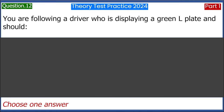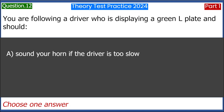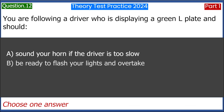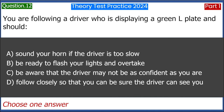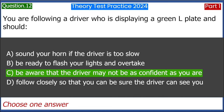You are following a driver who is displaying a green L plate and should: A. Sound your horn if the driver is too slow. B. Be ready to flash your lights and overtake. C. Be aware that the driver may not be as confident as you are. D. Follow closely so that you can be sure the driver can see you. Answer: C. Be aware that the driver may not be as confident as you are.